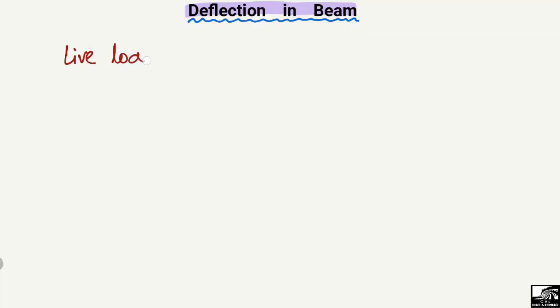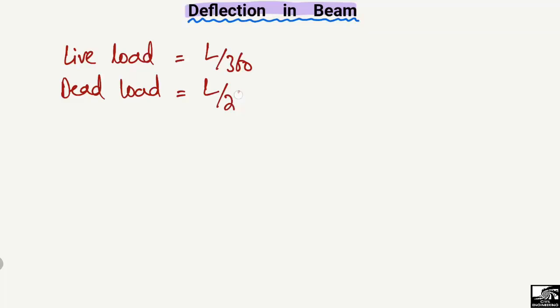We will look at how to find the deflection limits for beams, explained with examples and figures. There are different limits for the deflection of beams, mainly for live load and dead load. In the case of live load it is L/360, while in the case of dead load it is L/240.